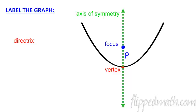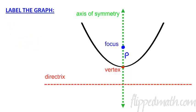Now directrix - this is also something that's kind of new to you, you probably haven't seen this before. This is some imaginary line on the other side of the vertex. So if you have a focus, you go the other way - there's your directrix. And the distance from the vertex to the directrix is also the value of p.